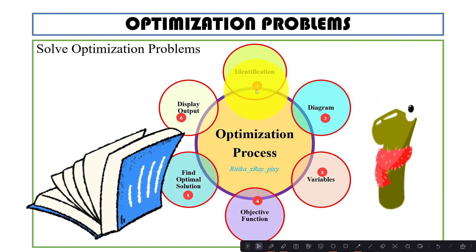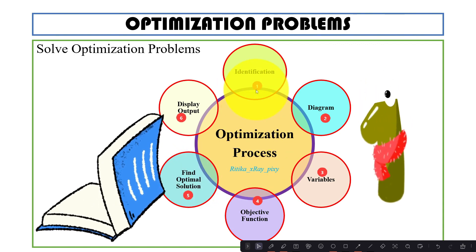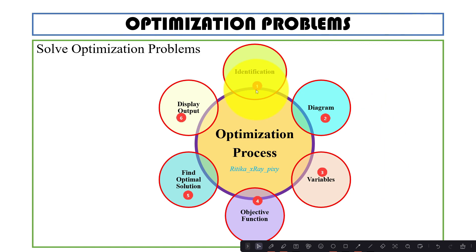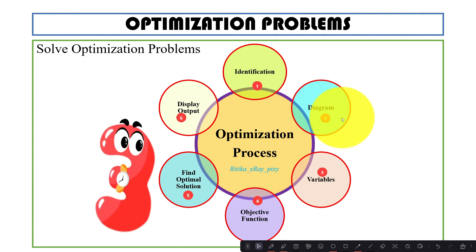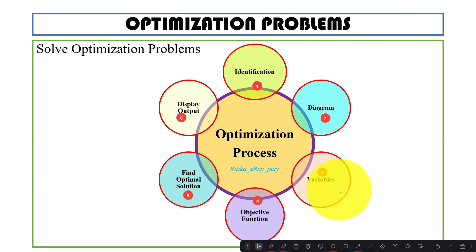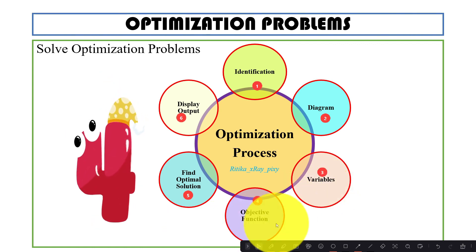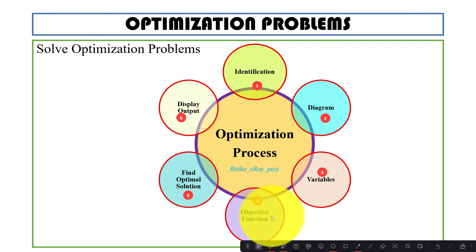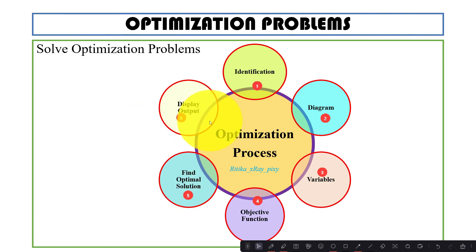To summarize the basic steps: first is problem identification — what we want to minimize or maximize and the constraints. For more clarity, draw a diagram. Decide variables and their units, such as cost in dollars. Formulate the objective function, express it with the help of constraints, then apply an optimization technique and find the optimal solution.